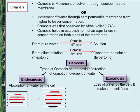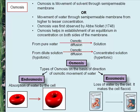Osmosis is the movement of solvent through a semi-permeable membrane, or the movement of water through a semi-permeable membrane from higher to lesser concentration. Osmosis was first observed by Abbe Nollet in 1748. Osmosis helps establish an equilibrium in concentration on both sides of the membrane. Types of osmosis based on direction: endosmosis is the absorption of water by the cell; exosmosis is the loss of water by the cell, making the cell flaccid. By osmosis, water enters the xylem vessels through the root hair and is conducted to all parts of the plant by transpirational pull.